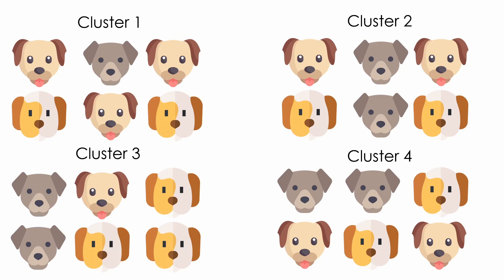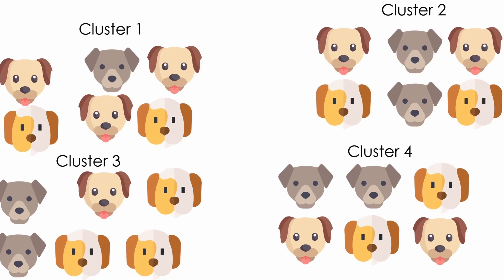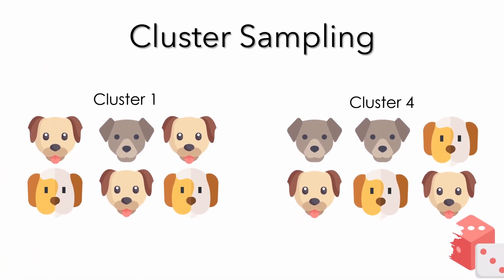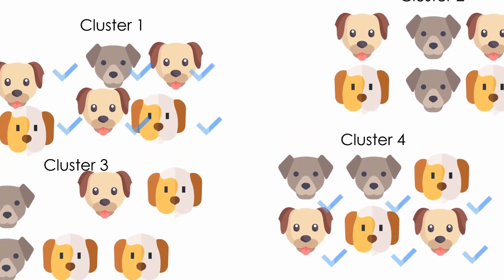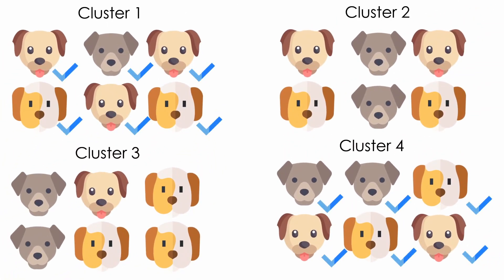We decided to cluster the villages. Now we used two random numbers to get our first and last cluster. Then we speak to every dog owner in our chosen clusters.